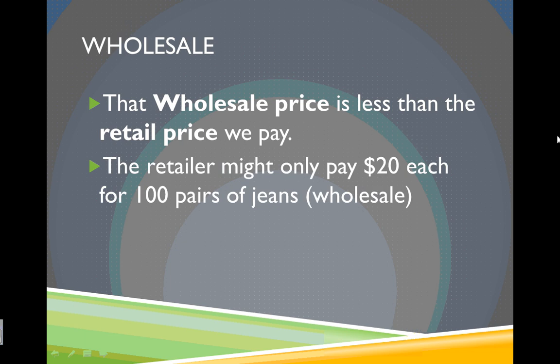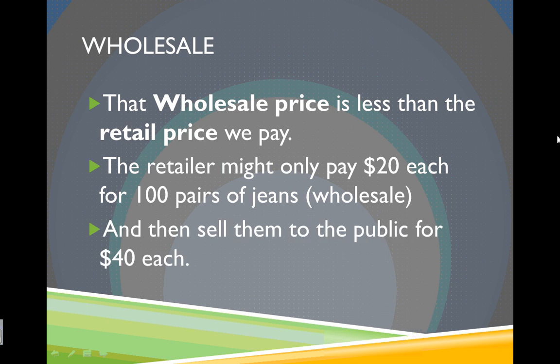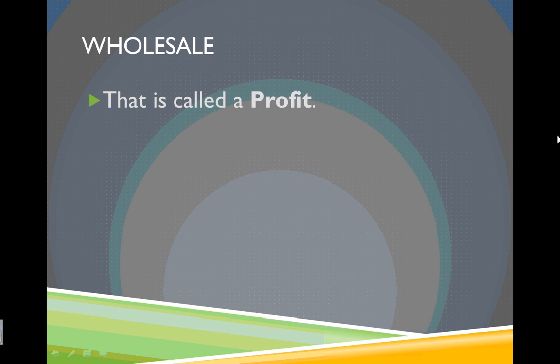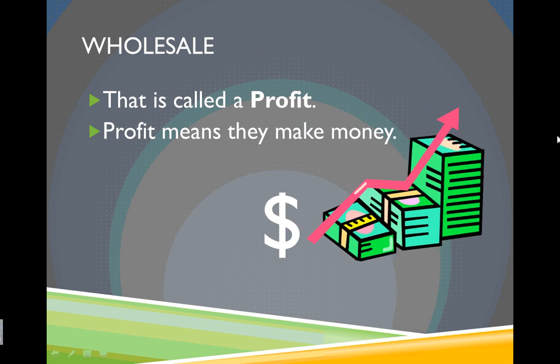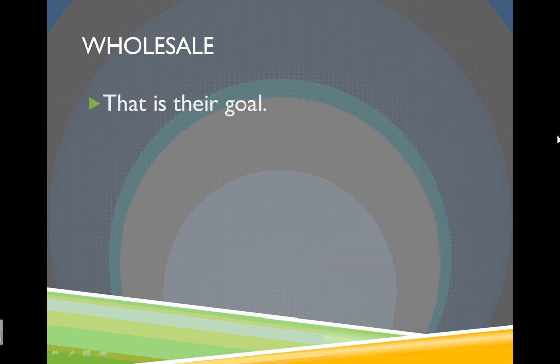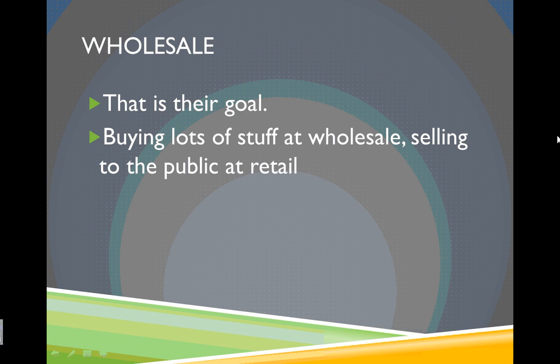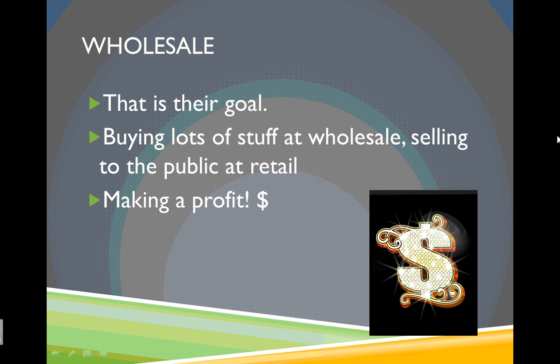So the retailer might only pay $20 each for 100 pairs of jeans, and then sell them to the public for $40 each. That's called a profit. Profit means that they make money — they're making the big bucks, and that's their goal. By buying lots of stuff at wholesale and selling it to the public at retail, they're trying to make a profit to pay employees and many different things. So making a profit is the goal.